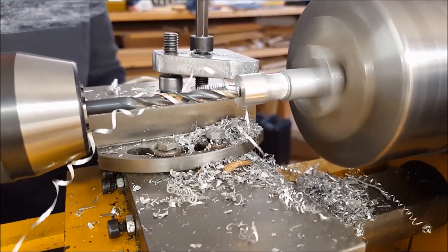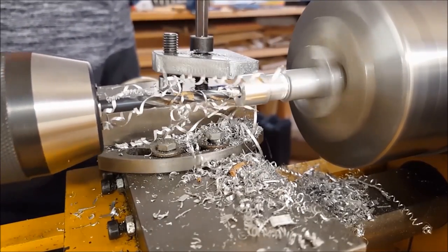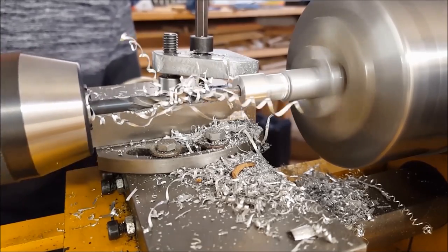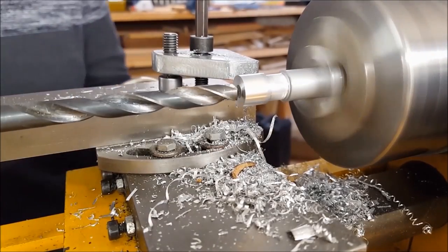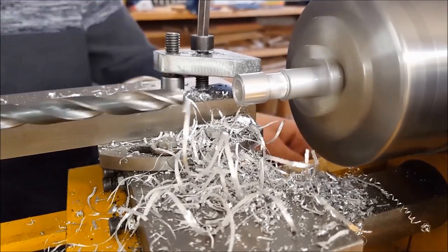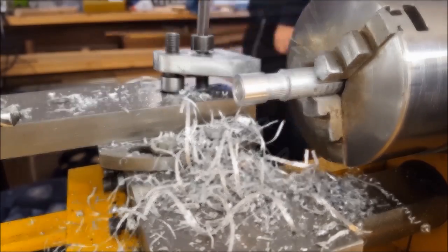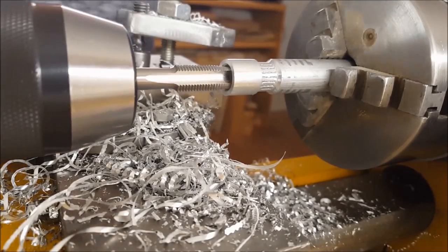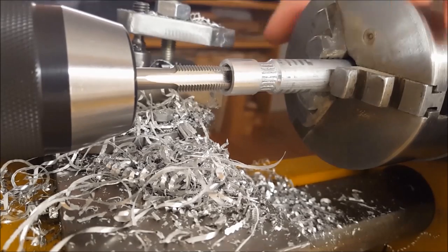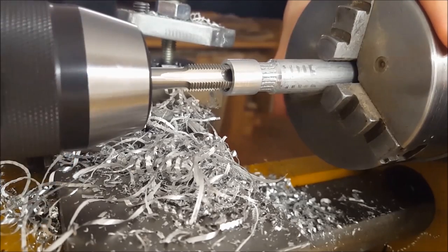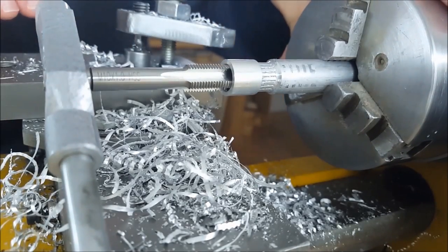And then the part could be drilled in two steps. What followed was a quick countersink, and the part was ready for tapping. Because the lowest speed of my machine is 250 RPM, I always rotate the machine by hand on these tapping jobs.